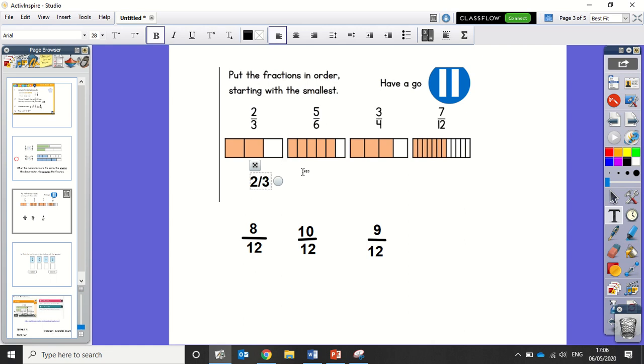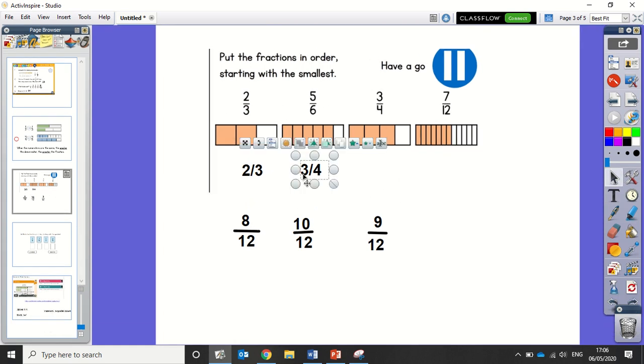So now we've got 9 twelfths. Then we've got 3 quarters. Then we've got the 5, 6. Nope, silly Mr. Grokot, you've done that wrong. Let's get rid of that.